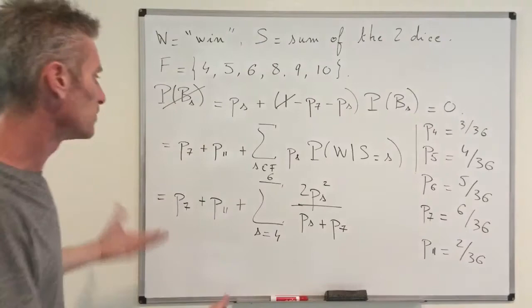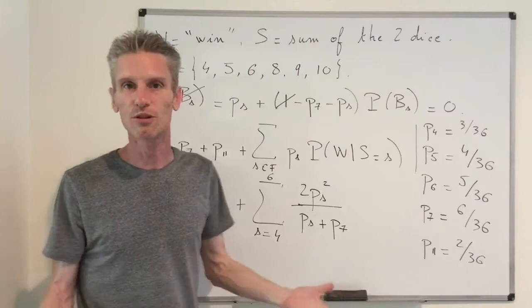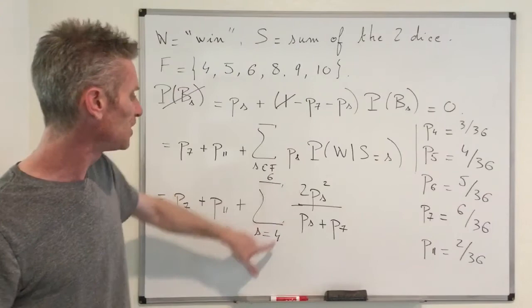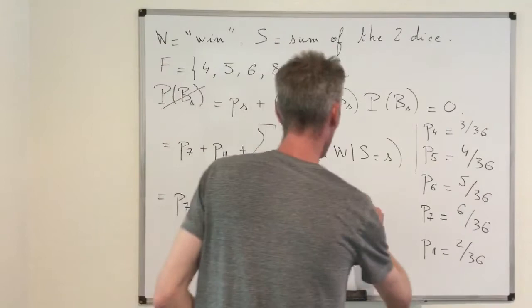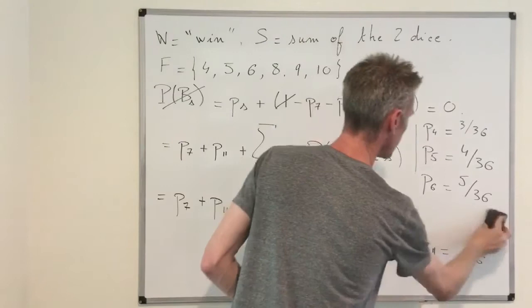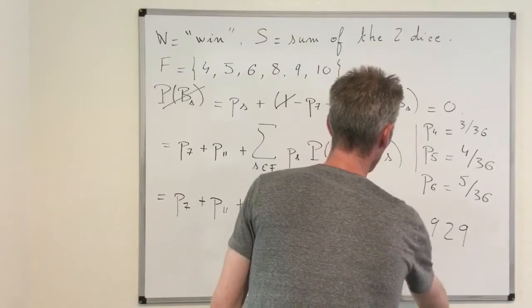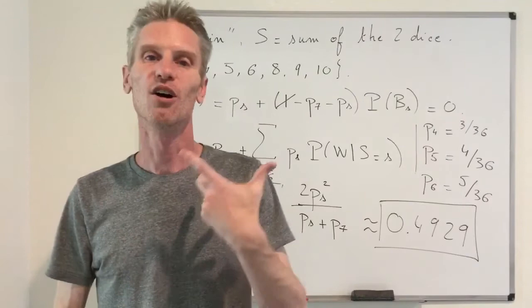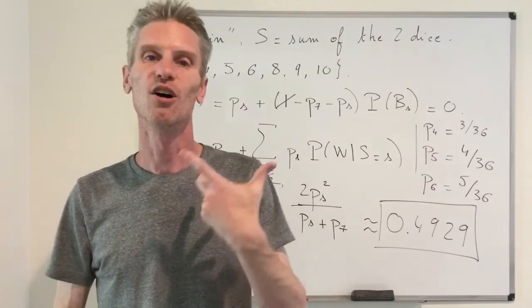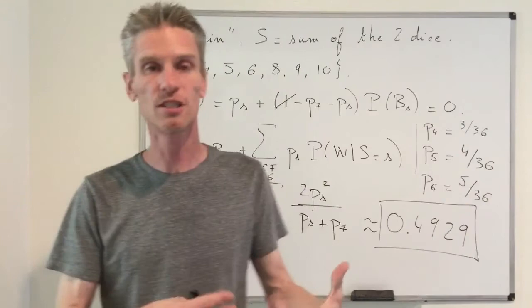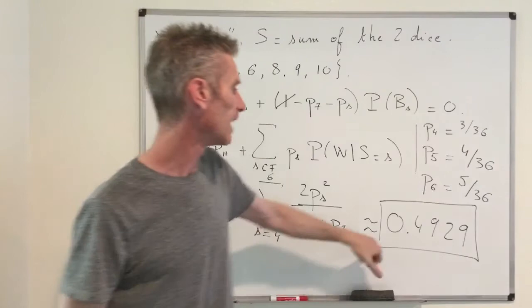Now the last step is to use a calculator and substitute the values of p_7, p_11, and p_4 through p_6. The final answer is that the probability of winning is approximately 0.4929. Indeed, the probability of winning is close to one half — if you play for a while or even dozens of times, you may feel the game is fair. But these conditioning techniques tell us that strictly speaking, the game is not fair: the probability of winning is slightly less than one half.